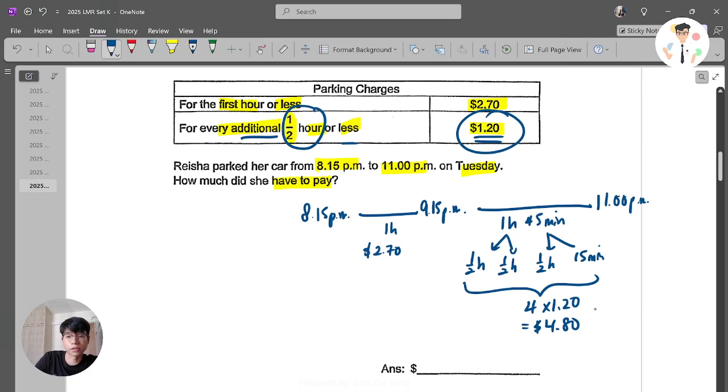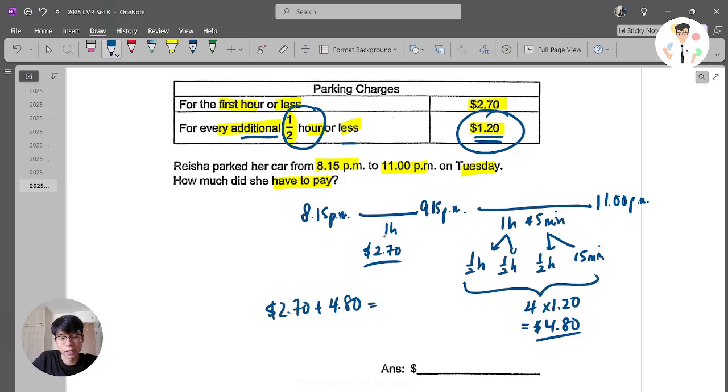So 1 hour, you know there's half an hour and half an hour. 45 minutes, you know there's half an hour and 15 minutes. And how many here of this requirement? 4. So I have $1.20 that I need to pay four times, which is $4.80. And of course, you need to add this and this together.